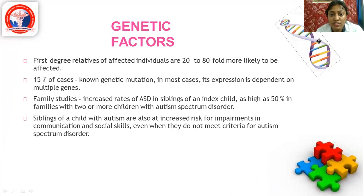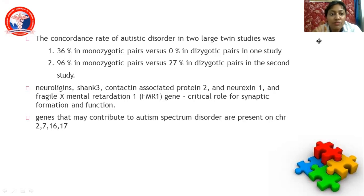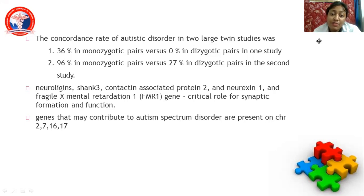Concordance rate is very important: 46% in monozygotic twins versus 0% in dizygotic in one study, and 96% in monozygotic versus 27% in dizygotic in another. Key genes include neuroligins, SHANK3, contactin-associated protein 2, neurexin 1, and the Fragile X Mental Retardation 1 gene (FMR1), which plays a critical role in synaptic formation. Genes on chromosomes 2, 7, 16, and 17 may also contribute.